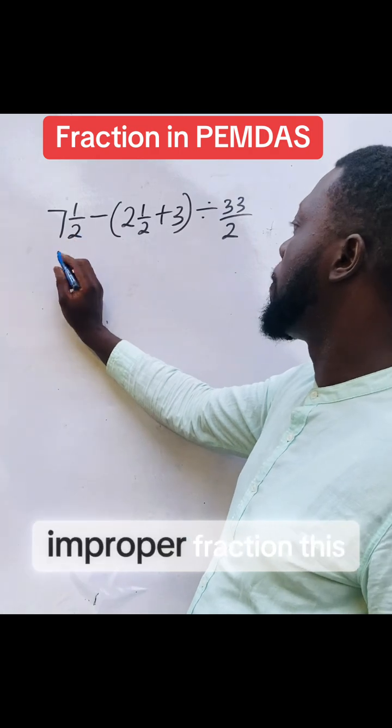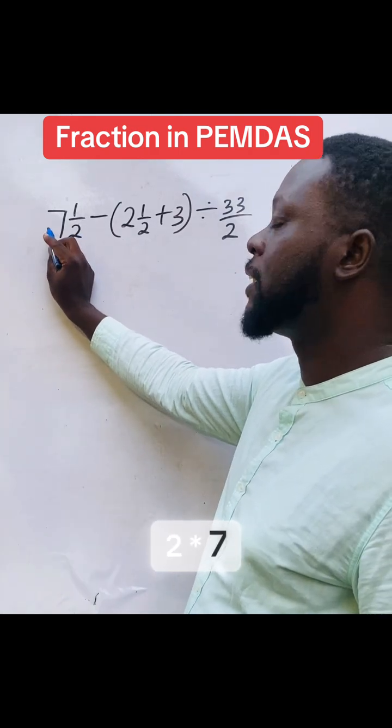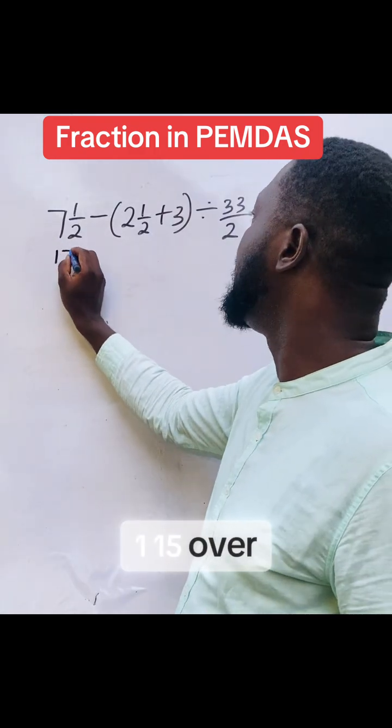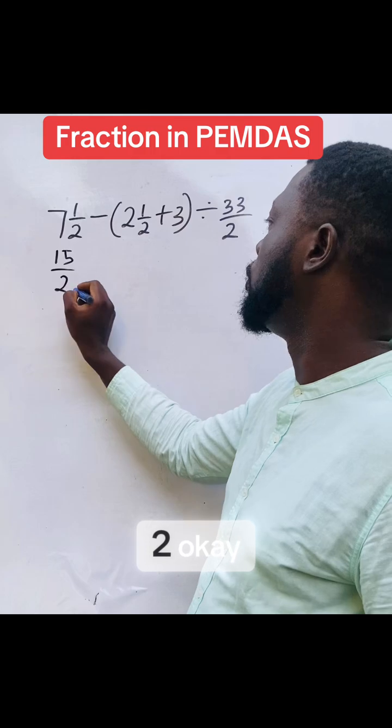This one converted to improper fraction. This 2 times 7 is 14, plus 1, 15 over 2. Okay?